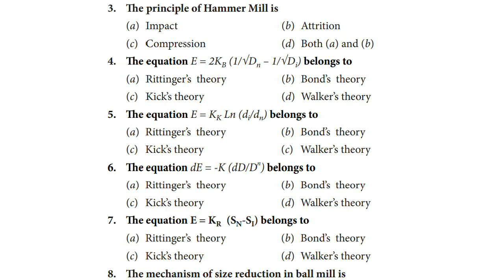Equation E = K_K ln(D_i/D_n) belongs to option A Rittinger's, B Bond's, C Kick's, or D Walker's theory. The correct answer is option C, that is Kick's theory.